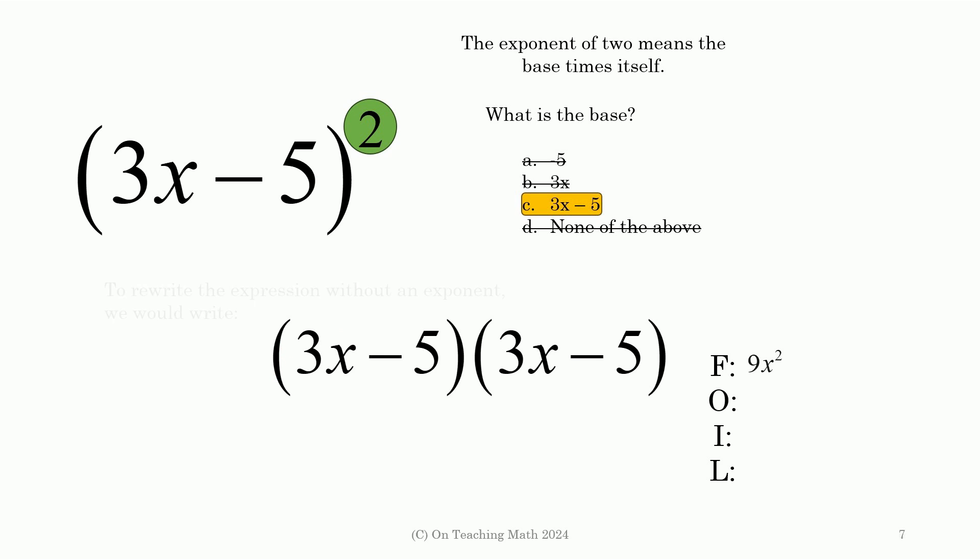So first would be 3x and 3x. That's 9x squared. The outside would be these two. 3x and negative 5 would make negative 15x. The inside are these two, negative 5 and 3x. That's, again, negative 15x. And then the last two. A negative times a negative is positive. Be careful with that.